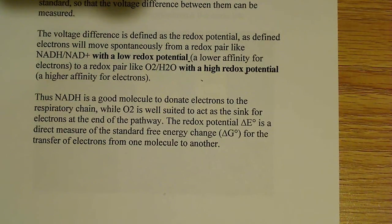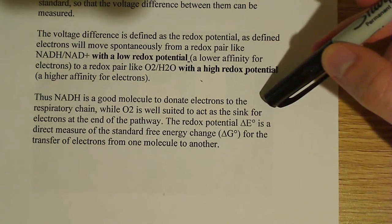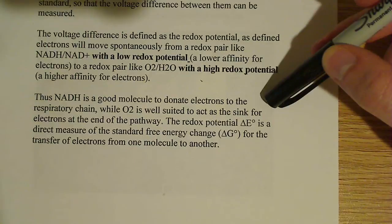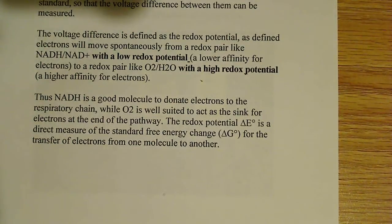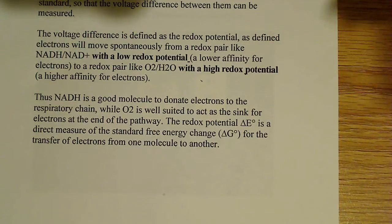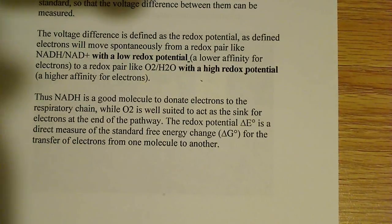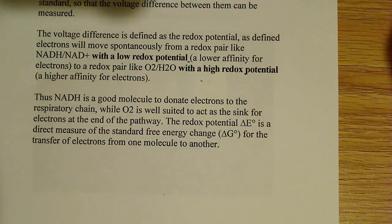To sum this up: NADH is a good molecule to donate electrons to the respiratory chain — it's very good at donating electrons. Meanwhile, O2 is suited to act as the sink, meaning it gains all the electrons; it sits at the end and takes up all the electrons, so O2 is well suited to act as a sink for electrons at the end of the pathway.